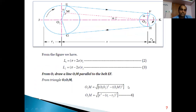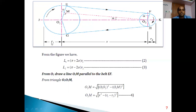For L1: the belt contacts the larger pulley from G to E. The line O1 to E makes a small angle alpha on both sides. Therefore L1 = (π + 2α) × R1. For L2: the belt contacts the smaller pulley from F to H. The total arc is 180° minus the two alpha angles on either side. Therefore L2 = (π − 2α) × R2.